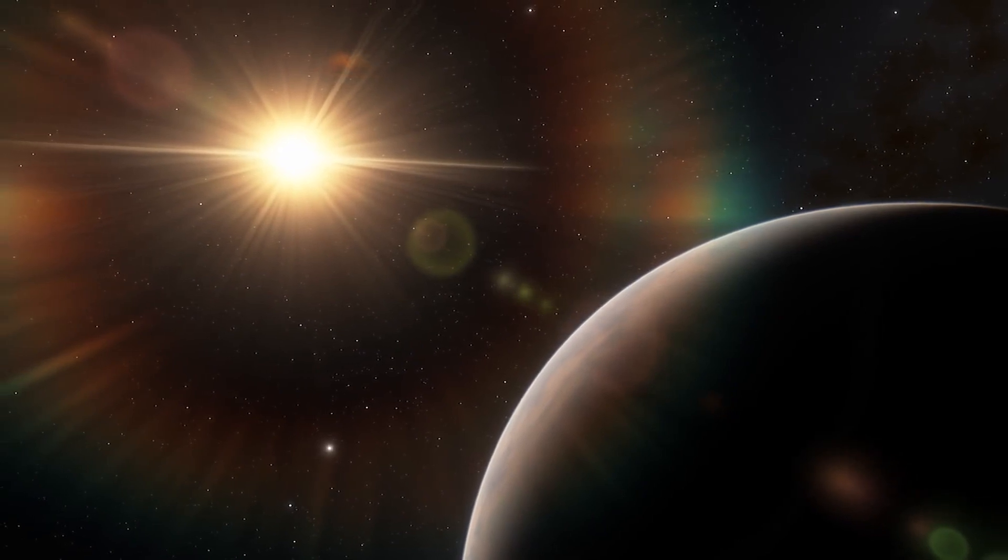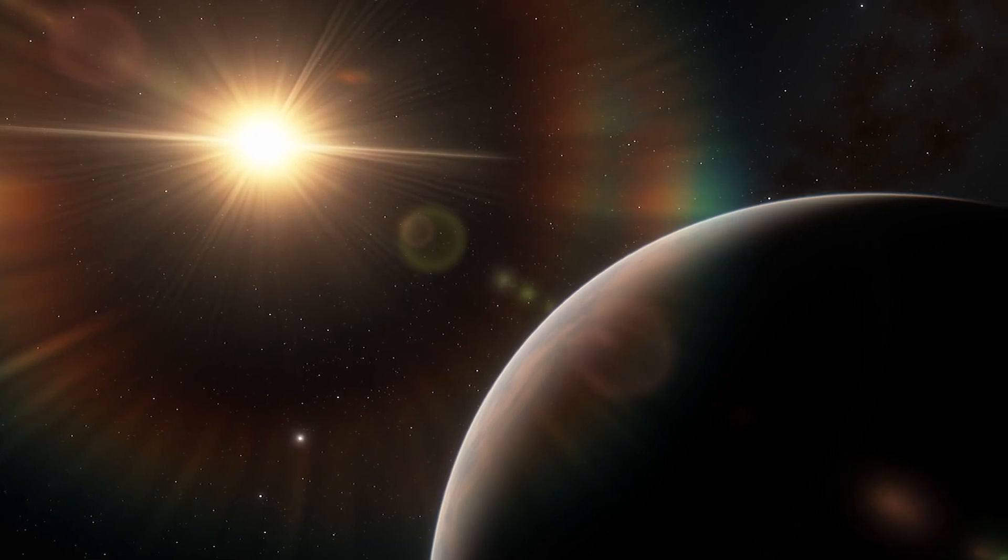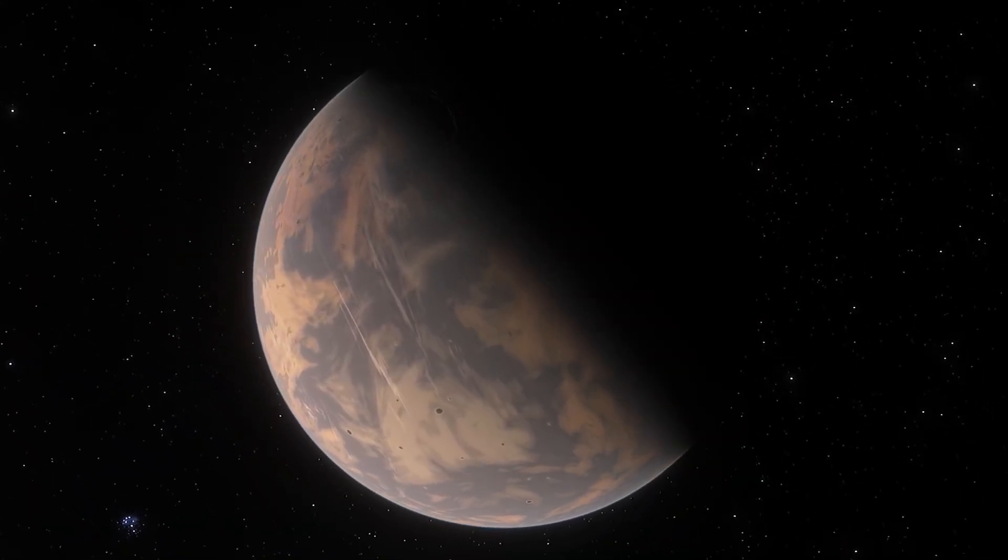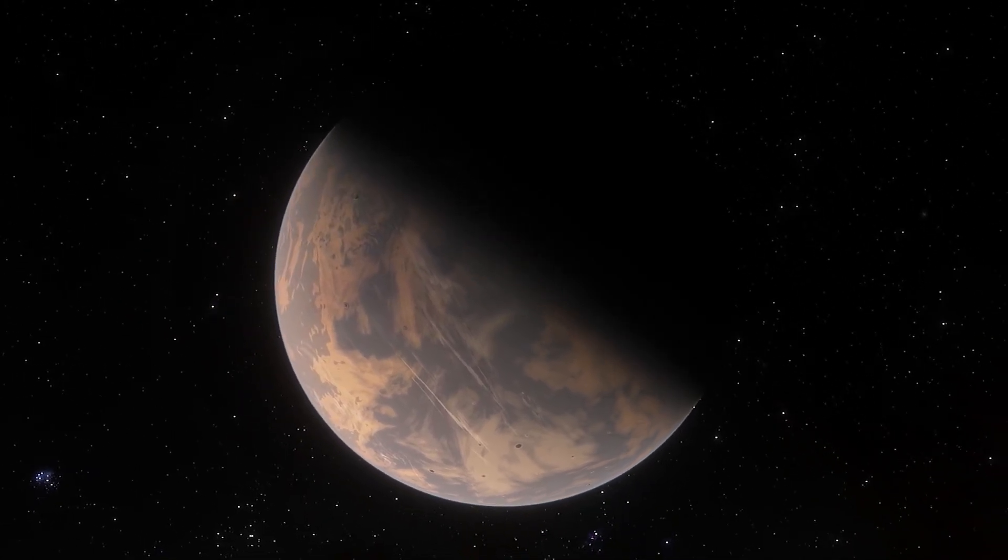If Proxima b has an atmosphere, the simple ingredients needed for the formation of biochemical cycles that we call life—water, carbon dioxide and rock—could all be present and interacting on the planet's surface.